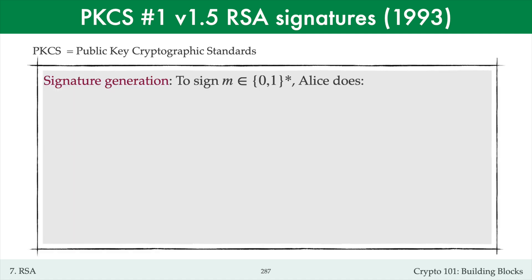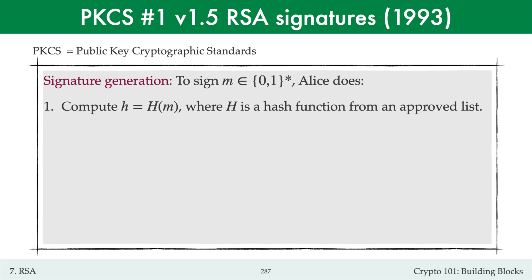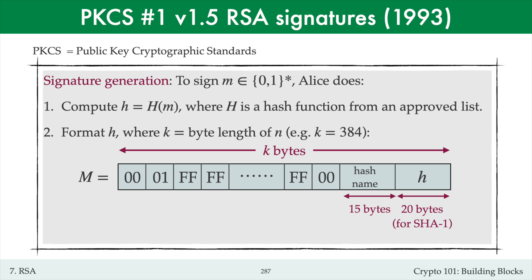To sign a message m of any bit length, Alice does the following. She hashes the message to get the hash value little h, where h is a hash function from an approved list. This list is maintained by a standards organization. The rationale for having a list of hash functions is that it was anticipated that many hash functions might be designed and used over time. Next, Alice formats the hash value h to get a formatted hash value capital M of the same byte length as the modulus n.